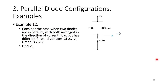Another example: consider two diodes in parallel — a silicon diode and a green LED — both arranged in the direction of current flow but with different forward voltages: 0.7 volts and 2.2 volts respectively. Since they are in parallel, they cannot both be on at different voltages simultaneously.